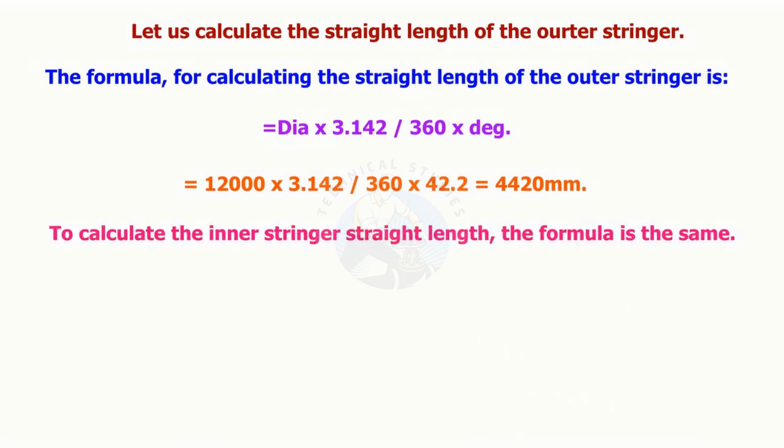The formula to calculate the length of the inner stringer is the same. The straight length of the inner stringer is 3,830 millimeters.